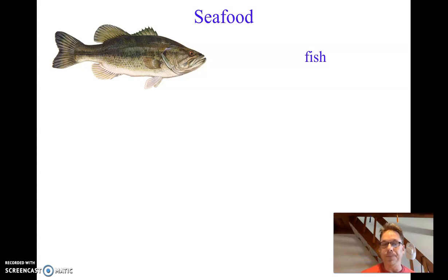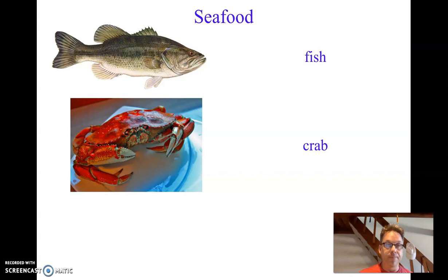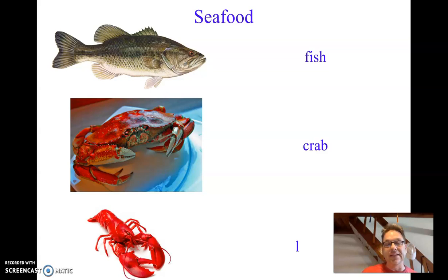Another kind you might see is crab. And a similar food that we eat is lobster. Both of these, we sort of crack them open after we cook them, and we get the meat out and eat it.